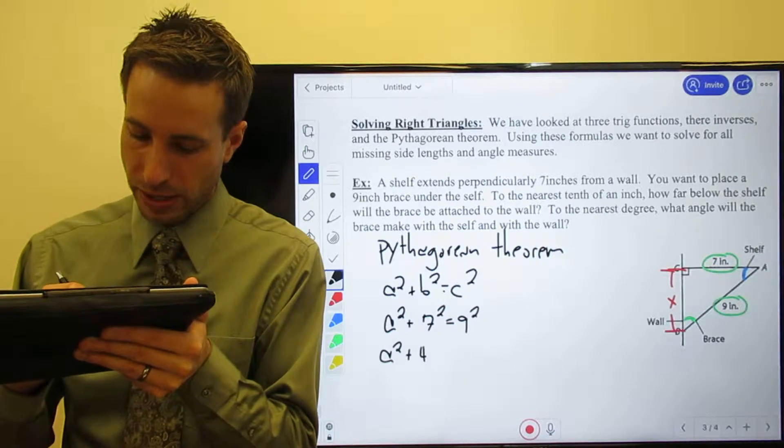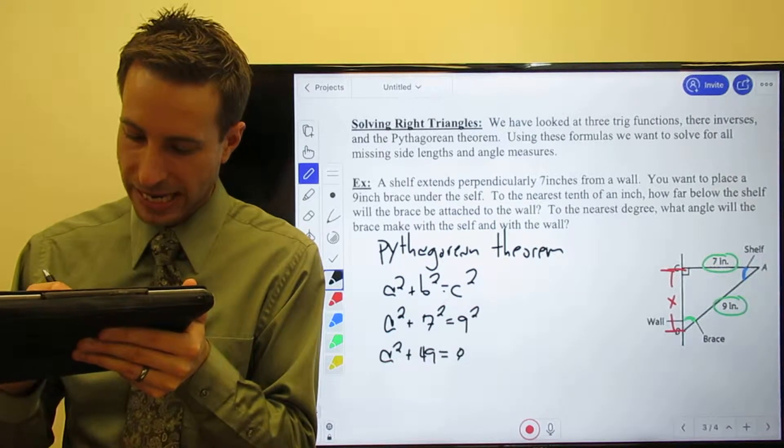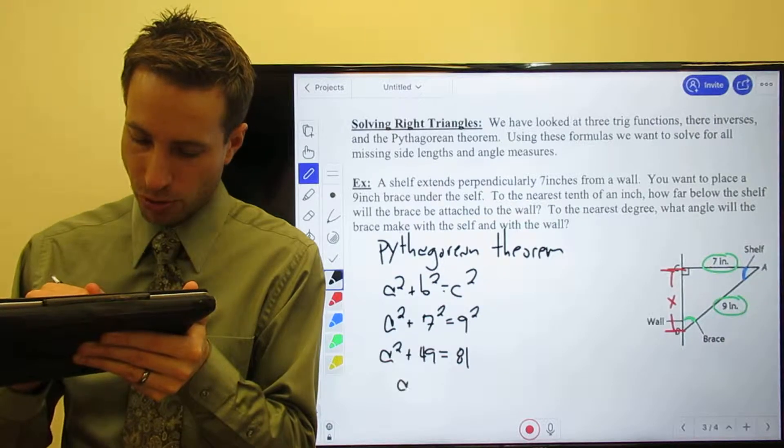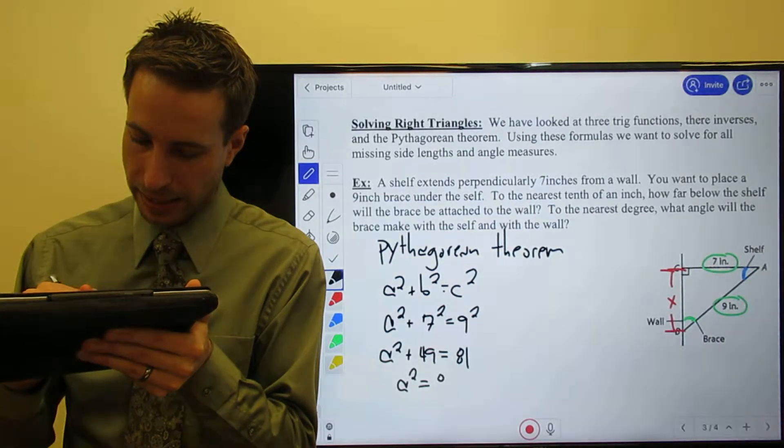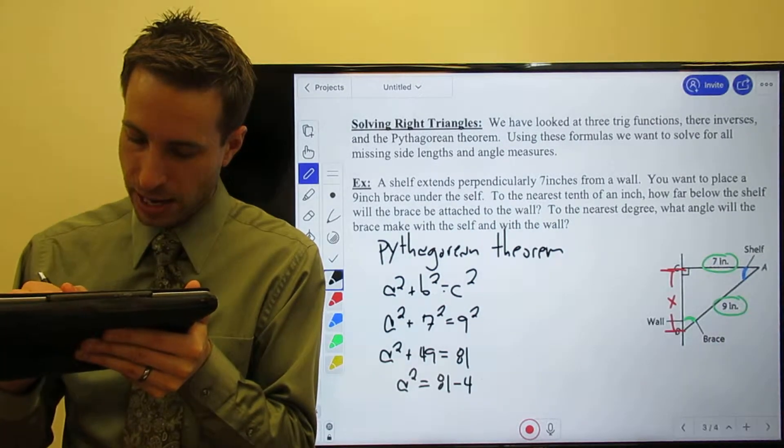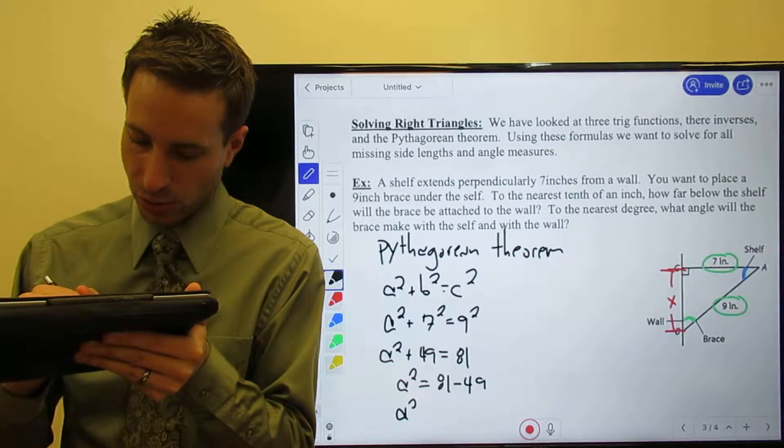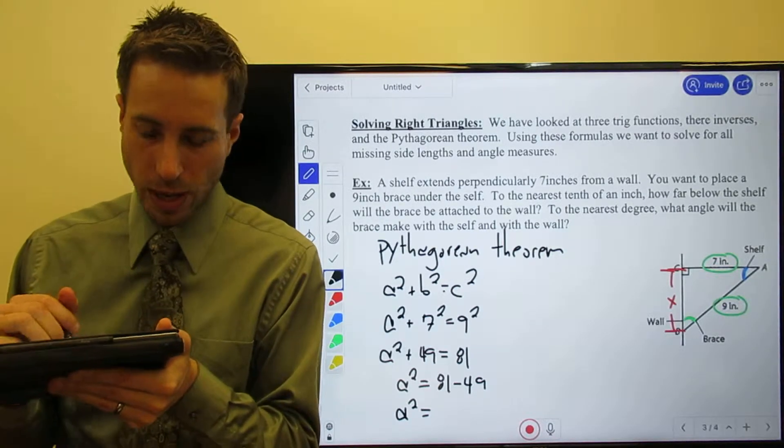A² + 49 = 81. We'll subtract the 49 to the other side; we wind up with A² = 32.